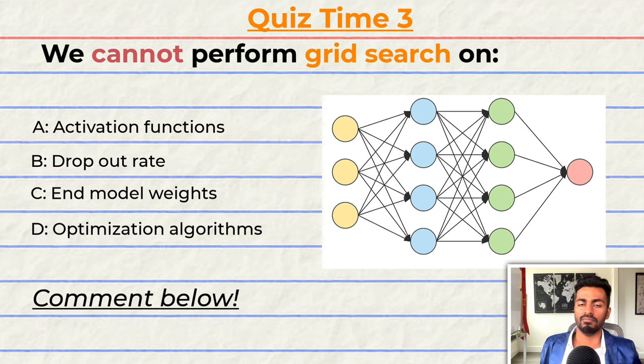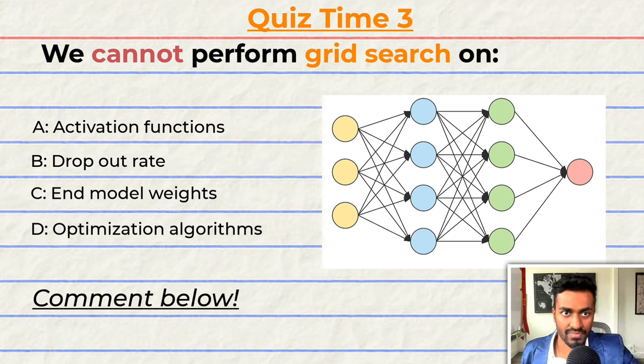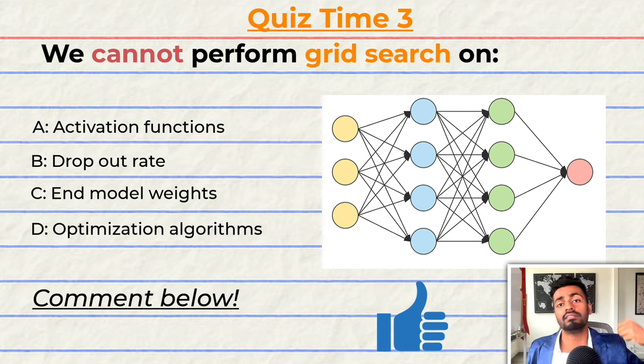Quiz time! This is going to be a fun one. We cannot perform grid search on: A, activation functions, B, dropout rate, C, end model edge weights, or D, optimization algorithms. Comment your answer down below and let's have a discussion. If you think I deserve it at this point and you love learning please consider giving this video a like because it will help me out a lot.